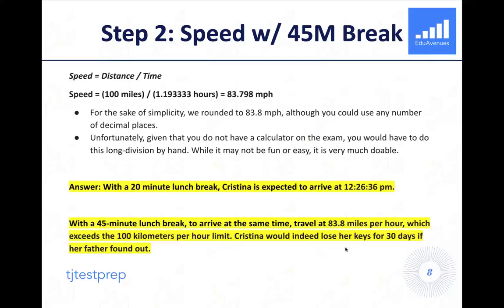That is our time that we have to drive. We've got a distance and we've got a time. Speed is distance over time. So we have to drive 100 miles in this many hours, and it's going to be 83.798 miles per hour. Or for the sake of simplicity, we round it to 83.8 miles per hour. Although here, you could really use any number of decimal places. The prompt didn't specify anything to this end. You could also be doing this in fractions, but it may end up taking even longer with fractions in this particular scenario. The unfortunate reality is that on test day you don't have a calculator, so you would have to do this long division by hand.